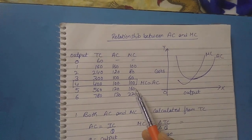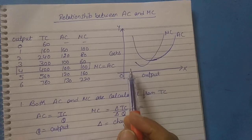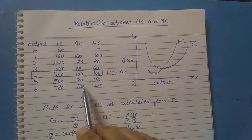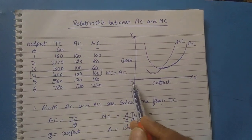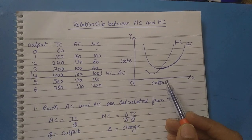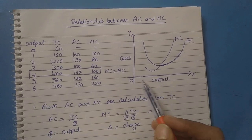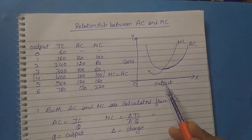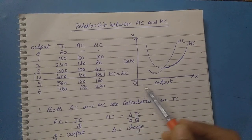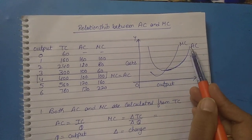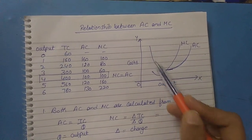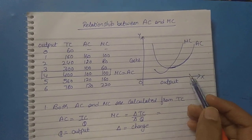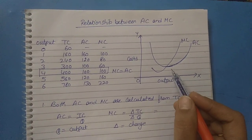Now let's move to our diagram so that we can understand more easily. We understood the schedule first, and now it's time to understand the diagram. On the OY axis, we will show the cost, and on the OX axis, the output. First, the AC curve.